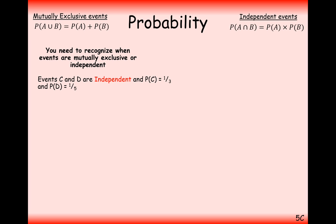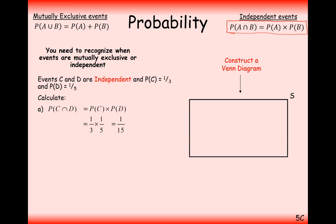Events C and D are independent, so we can use the multiplication rule. We have no information about whether they're mutually exclusive or not. To find the probability of C and D together, we multiply the probabilities: P(C) × P(D) = one-third × one-fifth = 1 out of 15. We can now construct a Venn diagram including probability values rather than whole numbers.